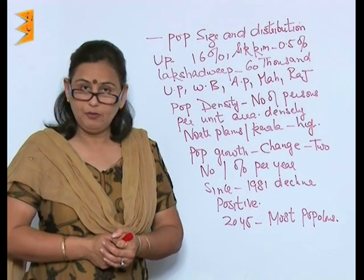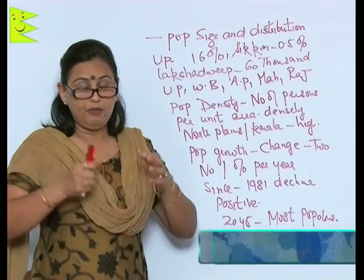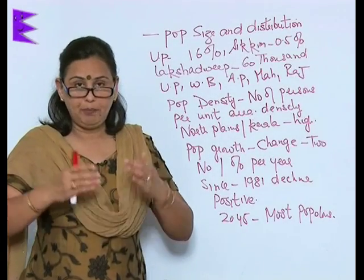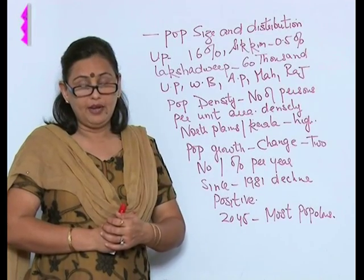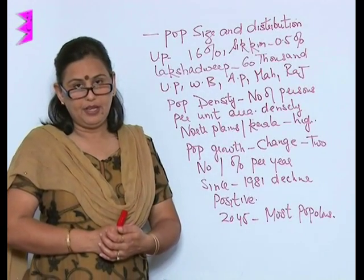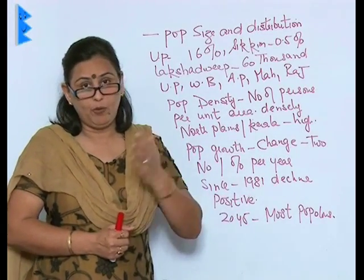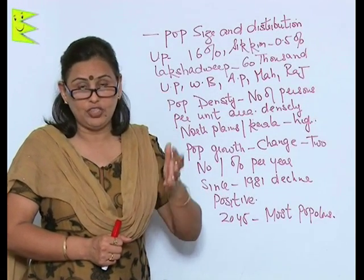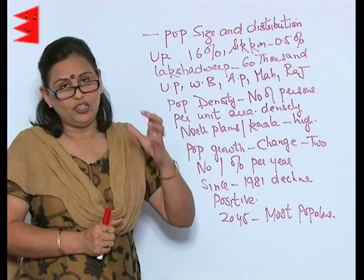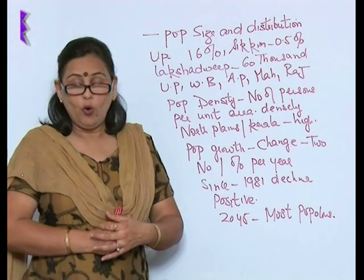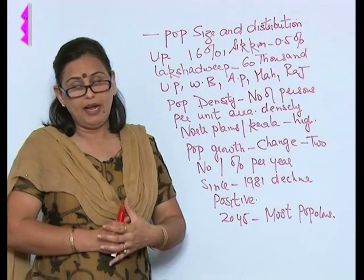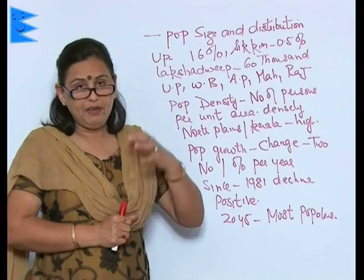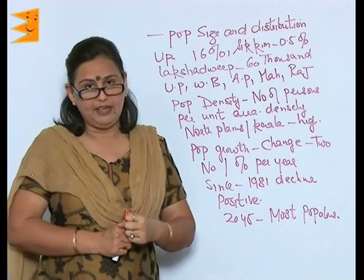Population of a country is very important, therefore we need to study different aspects of population — how many people live in a country, what kind of people live there, what is the life expectancy, birth rate, death rate, how many are literate. All this information is provided to us by the census, which takes place after every 10 years.